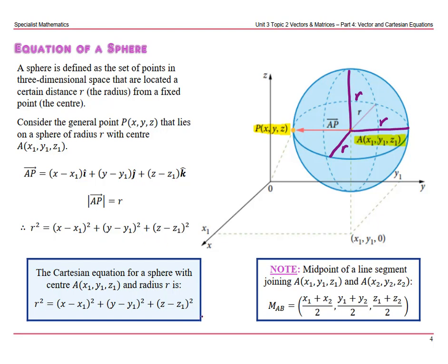Also note that the midpoint of a line segment, just like what we did in two dimensions — which was x1 plus x2 divided by 2, y1 plus y2 divided by 2 — we would just add that third dimension: z1 plus z2 divided by 2. So let's do some examples.